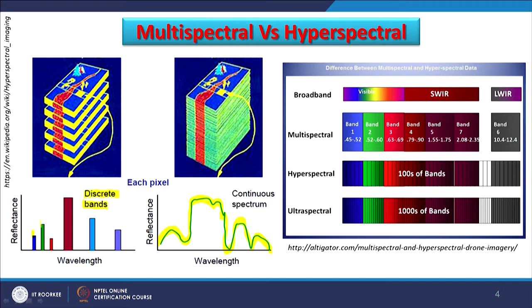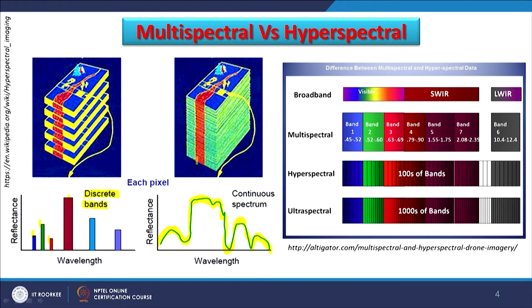In multispectral we have just a few responses in terms of reflectance, and if we connect them we may get a curve close to the continuous one but fine detailing will not be possible. However, with hyperspectral remote sensing the bands are continuous throughout, and therefore there are hundreds of bands making it possible to create a continuous spectral response curve. Multispectral provides discrete bands — though by interpolations you can create a curve — meaning there is a gap between 2 bands. In hyperspectral remote sensing there is no gap at all, so continuous coverage is possible.